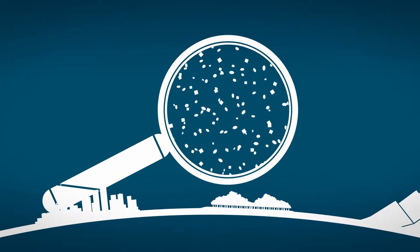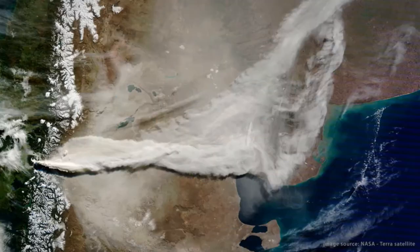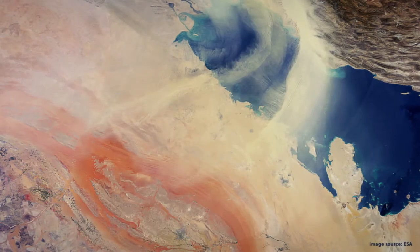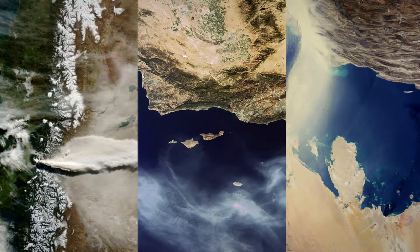Trillions of tiny particles are floating in the air. Volcanic eruptions, wildfires, sandstorms and other natural causes are sources of those tiny particles.